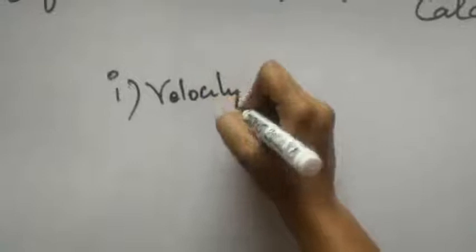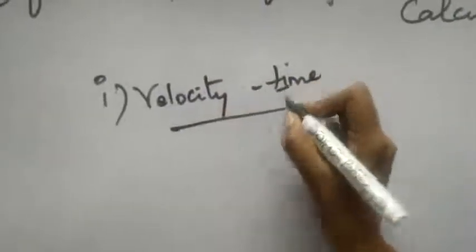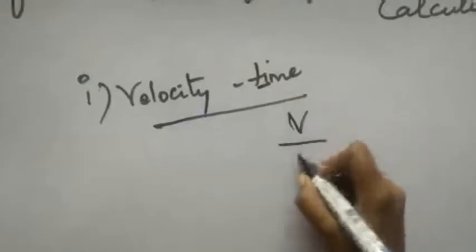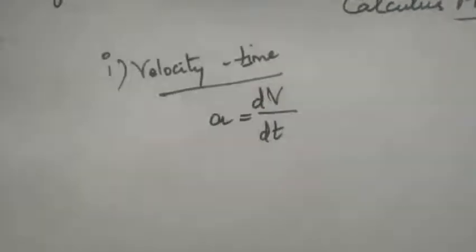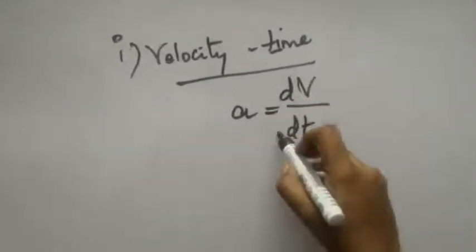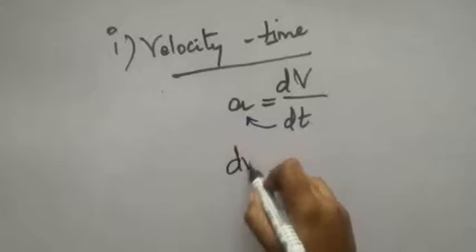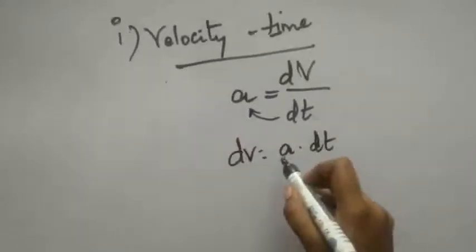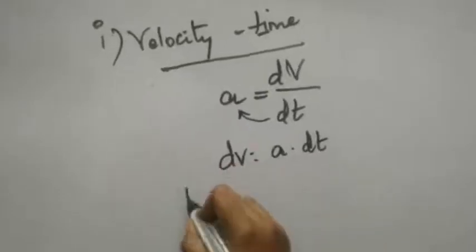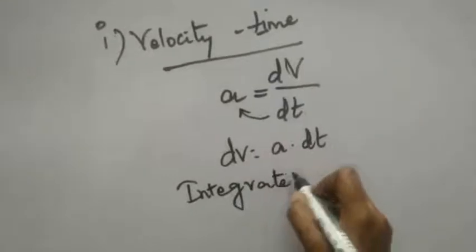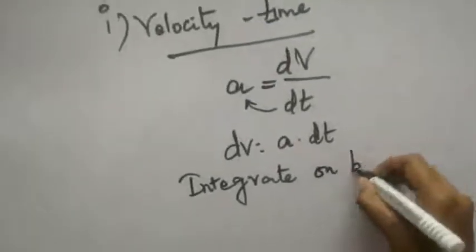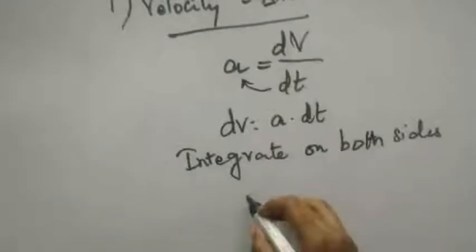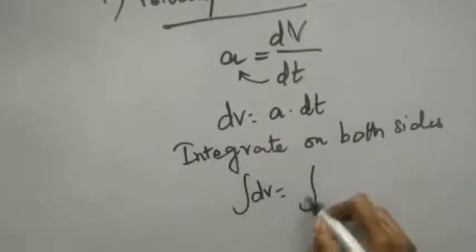First we are going to relate velocity with time. The change in velocity by change in time is nothing but acceleration a. So we have a equal to dv by dt. Bring dt to the other side: it becomes dv equal to a into dt. Now integrate this on both sides, so the equation is dv equal to a into dt. Integrating both sides: integral dv is equal to integral a dt.